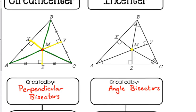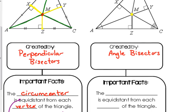The incenter is also equidistant, but it is equidistant from each side. So that's why there are perpendicular segments drawn in this triangle. It's measuring the distance from the incenter to the side of a triangle. We measure it perpendicularly.